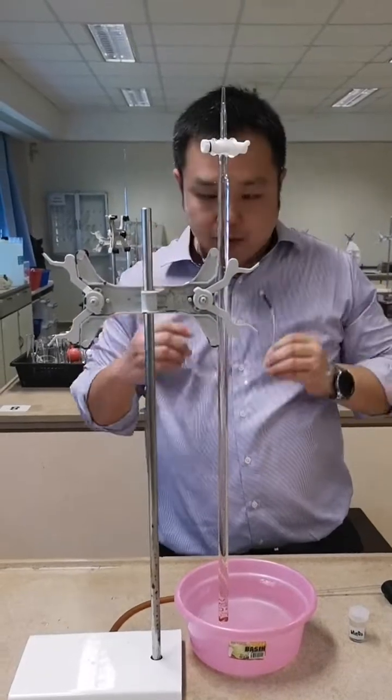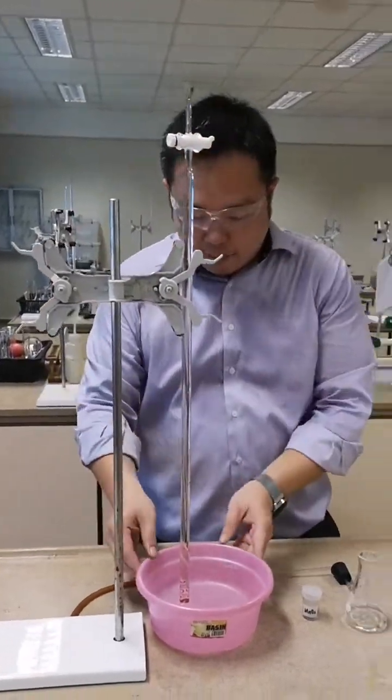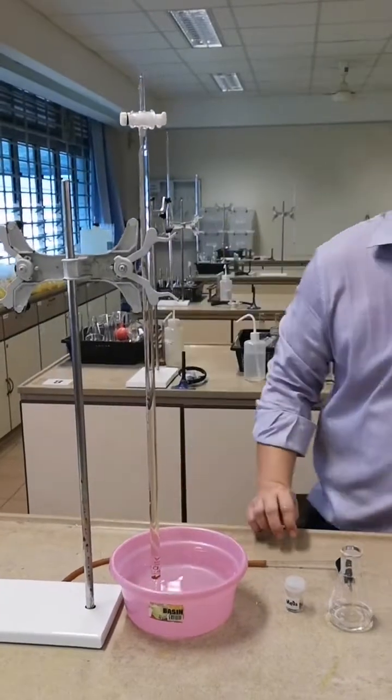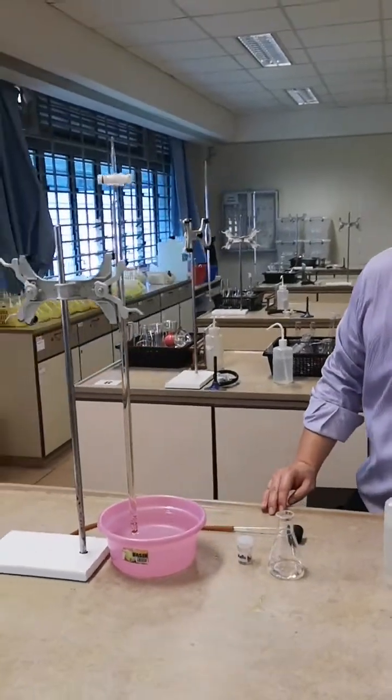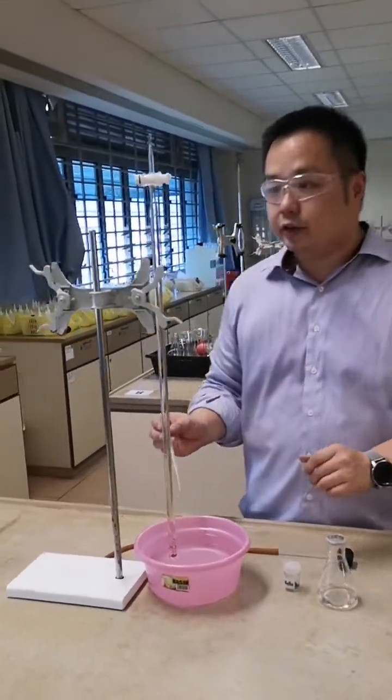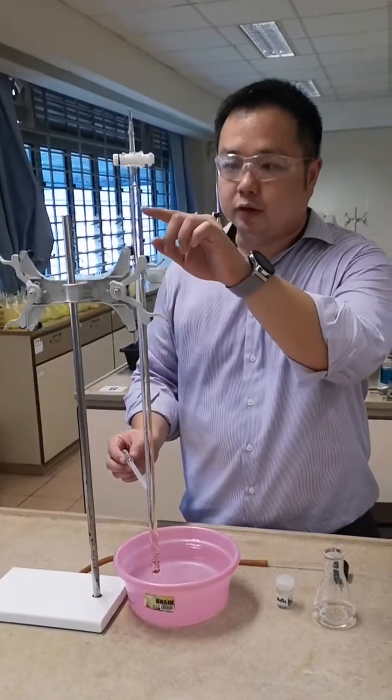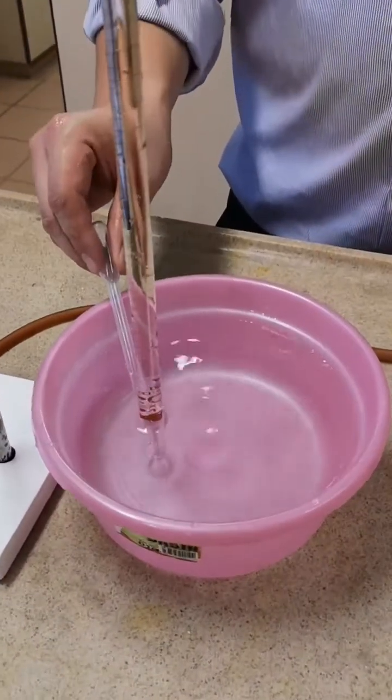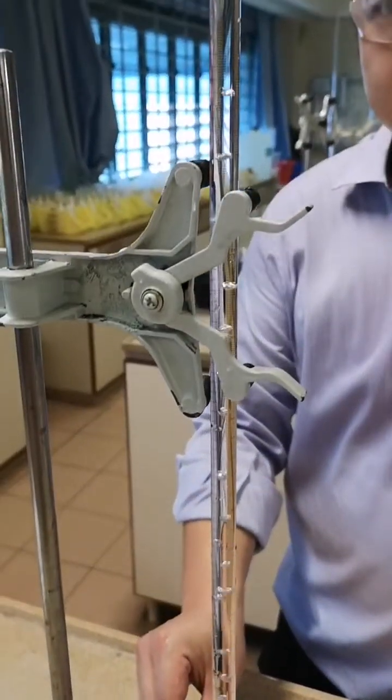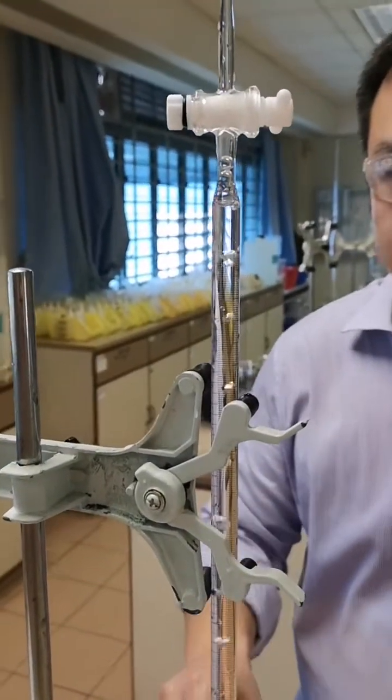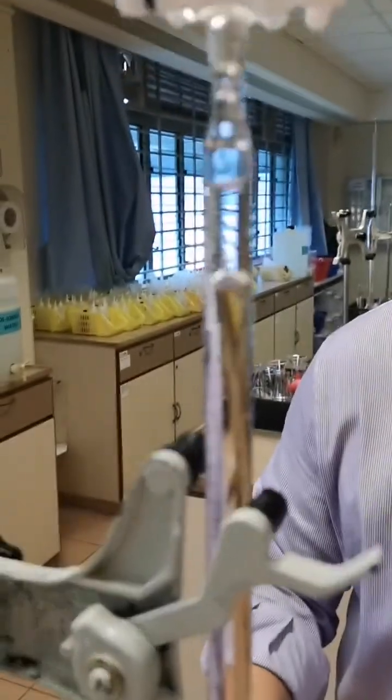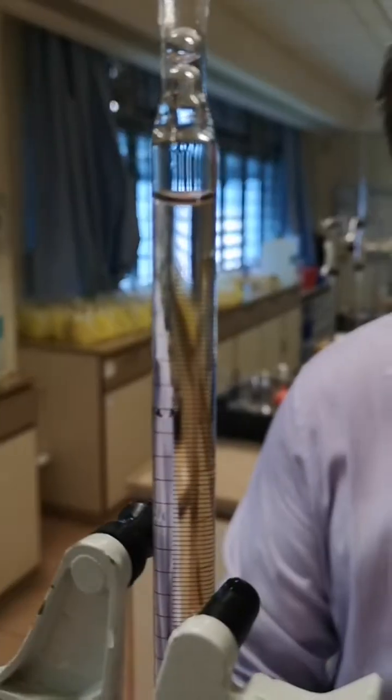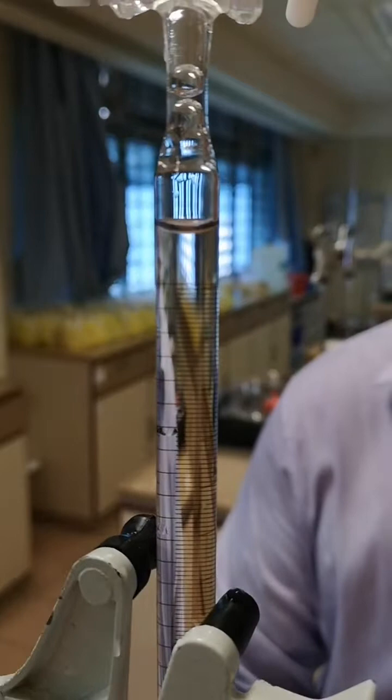Right now you have your burette clamped on and fully submerged in the water. Using a dropper, introduce some air bubbles to adjust the water level in the burette. This is so that you can read off the burette later on.